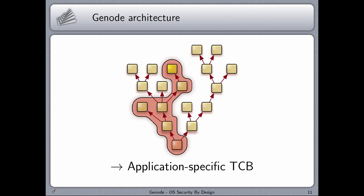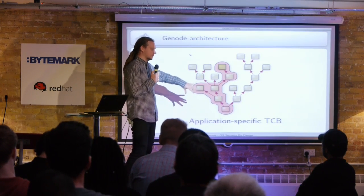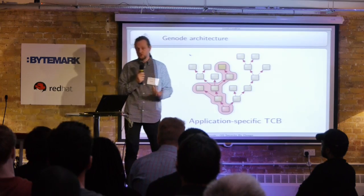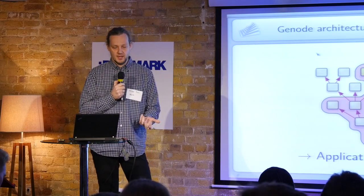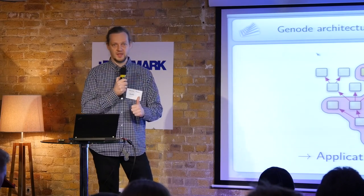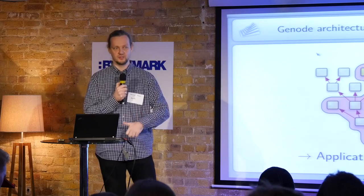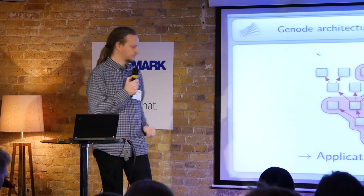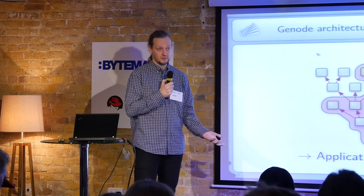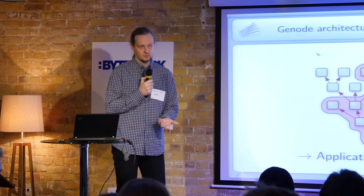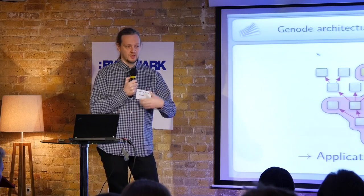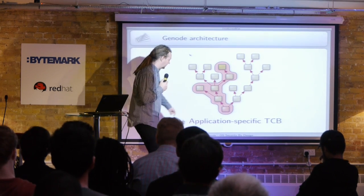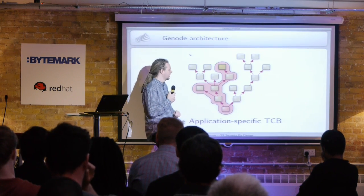This is the architecture of Genode. The system is structured as a tree — we know trees from Unix processes — but this tree is different. The relationship between parent and child nodes is an ownership relation. Parents own their child nodes, and ownership means two things: first, the parent is responsible for the child and must provide its resources, taking from its own budget to form new subsystems; and second, ownership means control — the parent decides what the child can do, what it can see, and can destroy the child at any time.